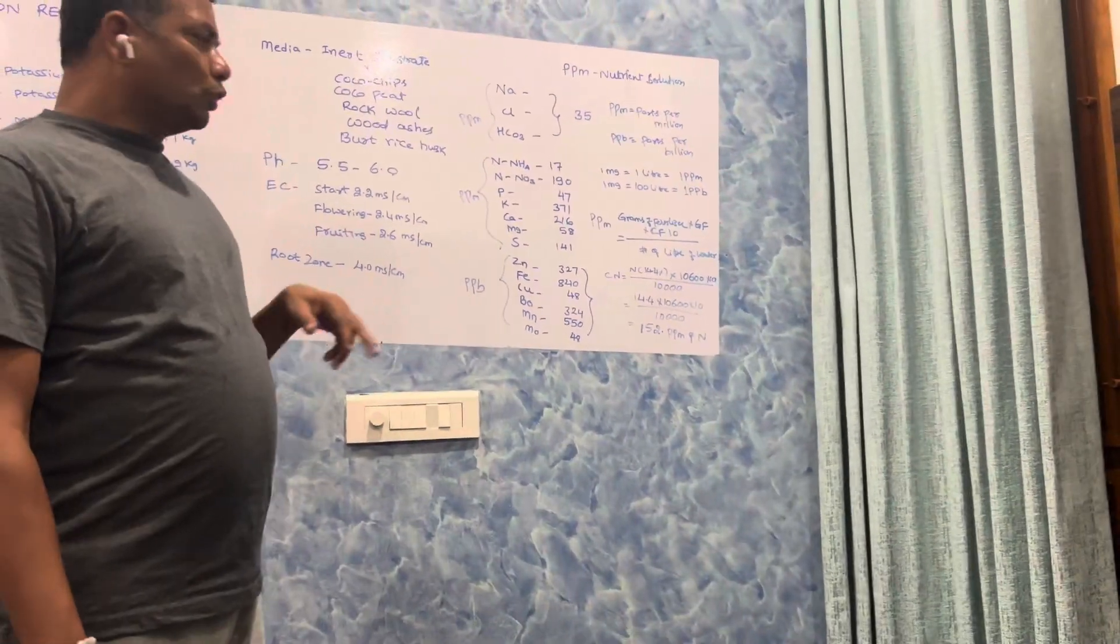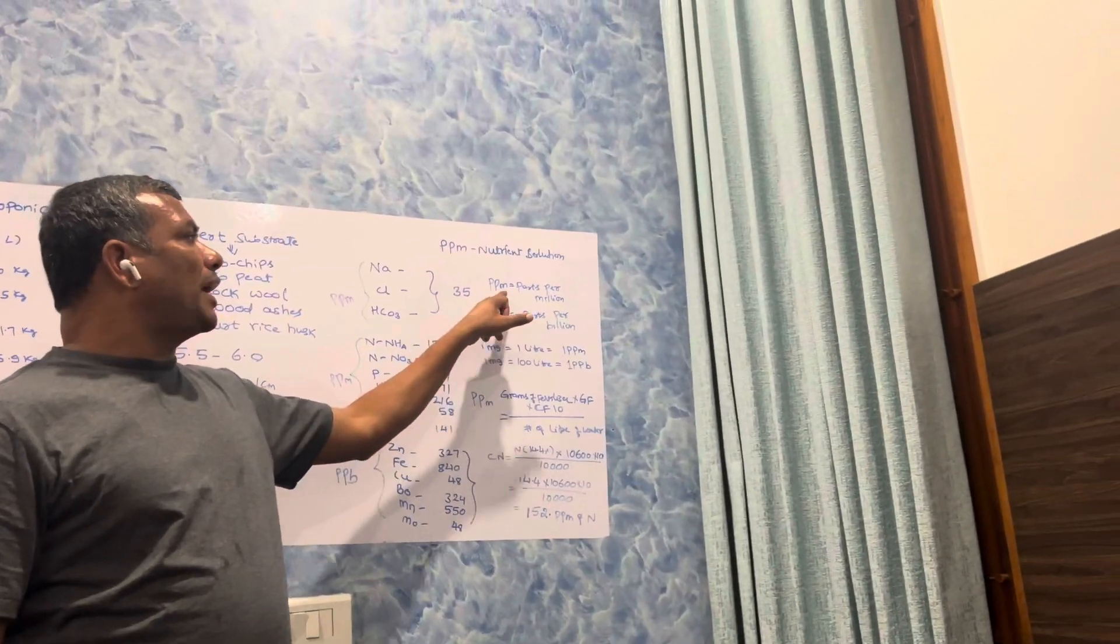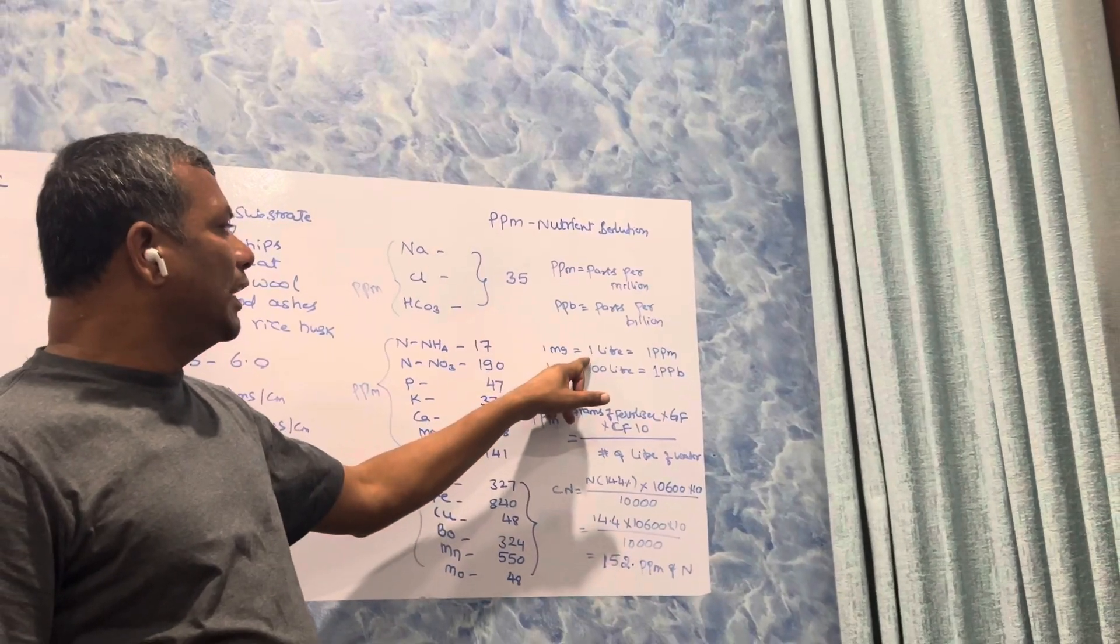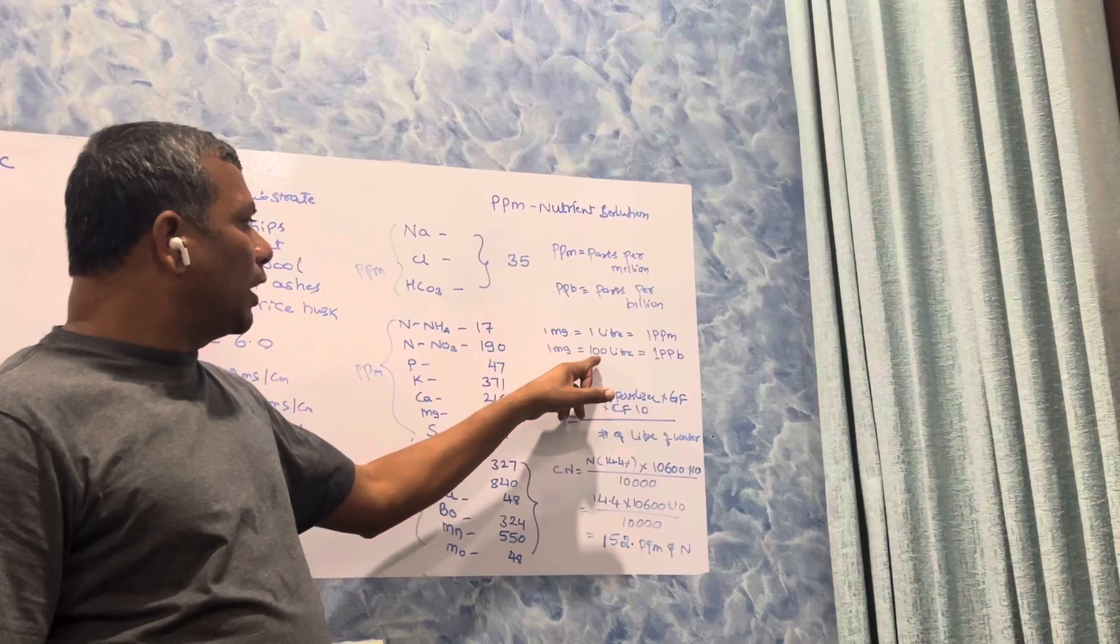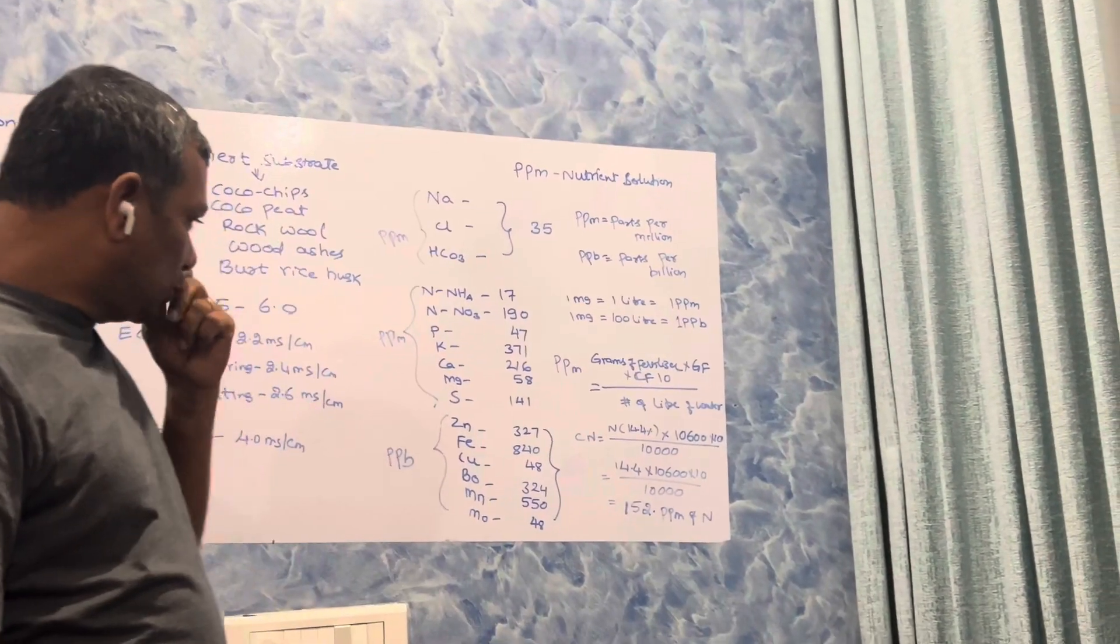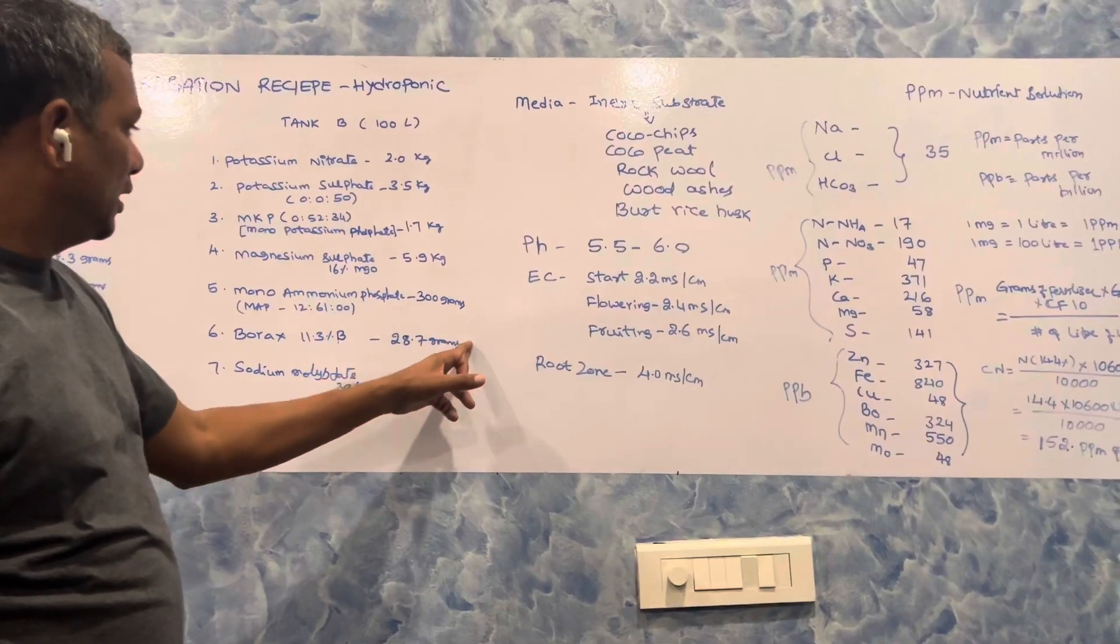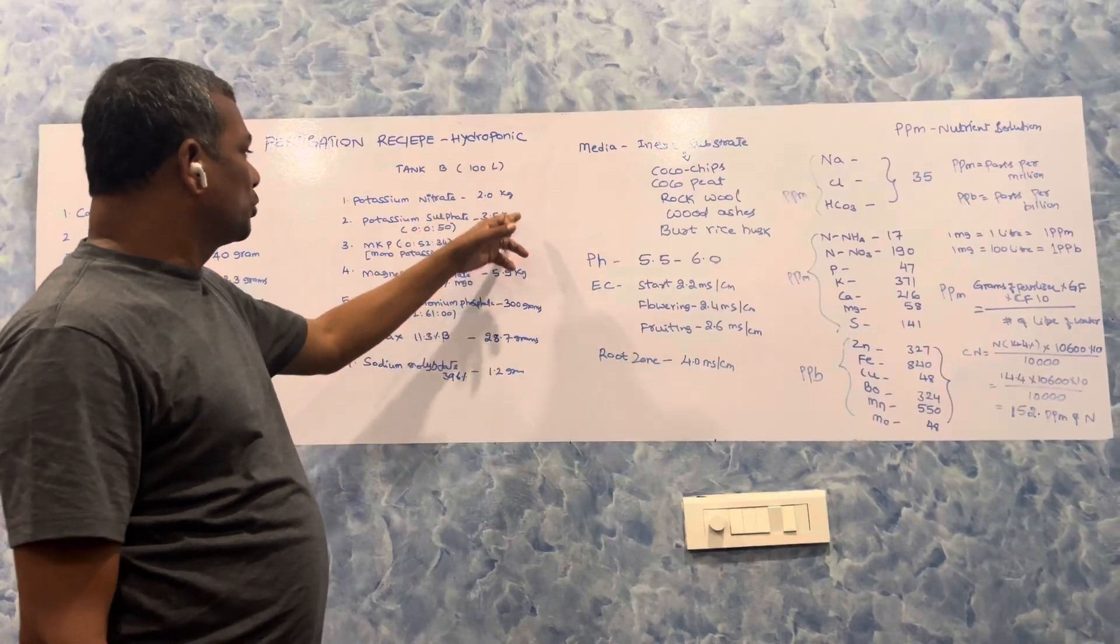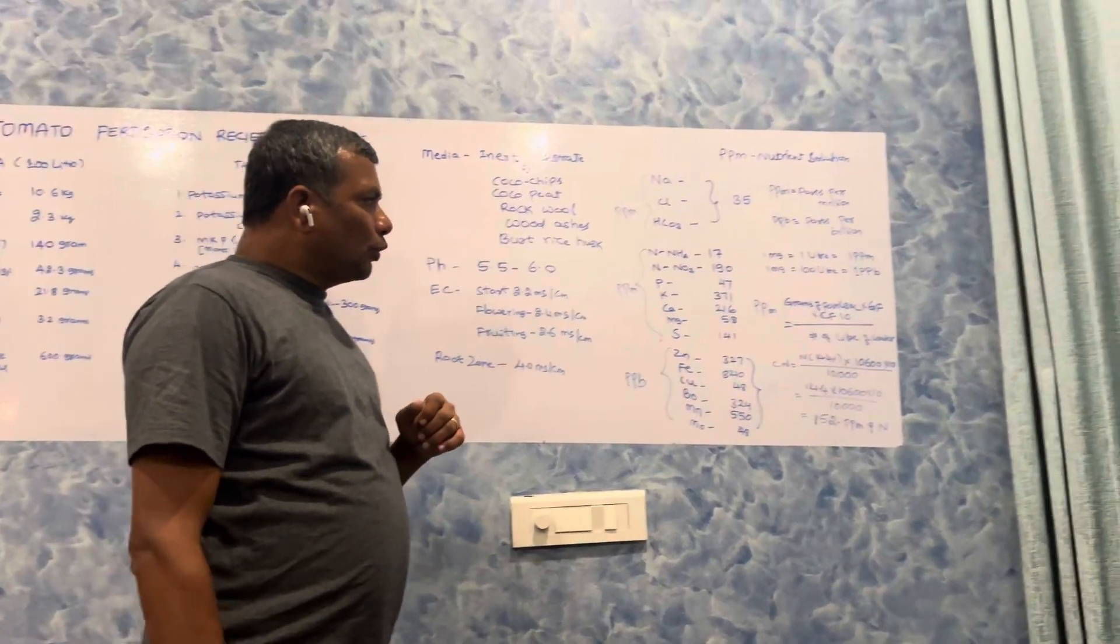What's the difference between PPM and PPB? PPM is parts per million and PPB is parts per billion. One milligram in one liter of water will give one PPM. One milligram in 100 liters of water will give one PPB. All these micronutrients you see in the system are used in grams, and other macro elements like N, P, K, calcium, magnesium we use in good quantities in kilos.